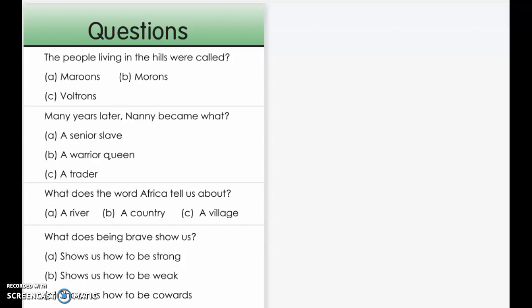What does the word Africa tell us about? A. A river B. A country C. A village. What does being brave show us? A. Shows us how to be strong B. Shows us how to be weak C. Shows us how to be cowards.